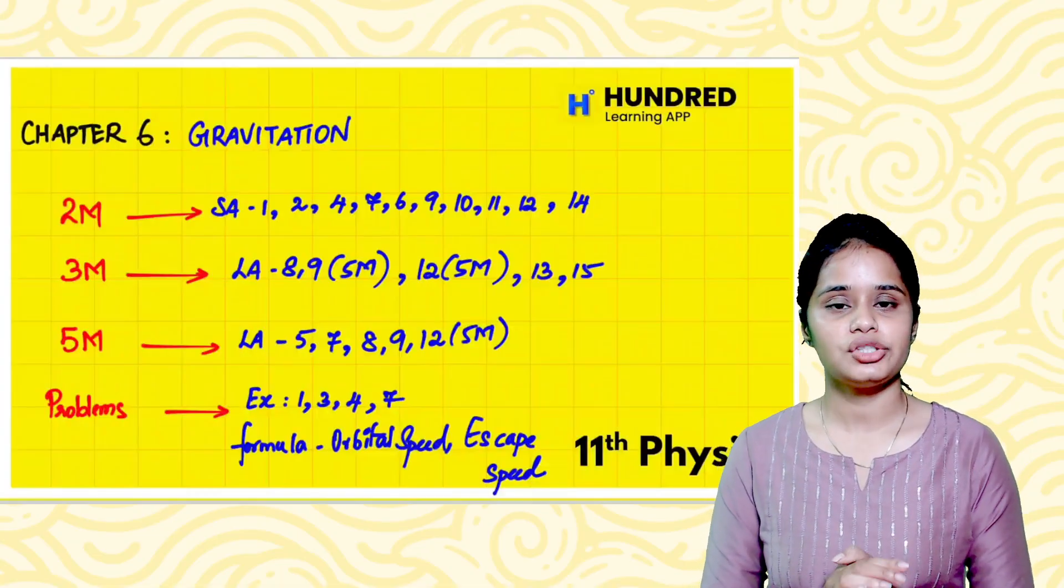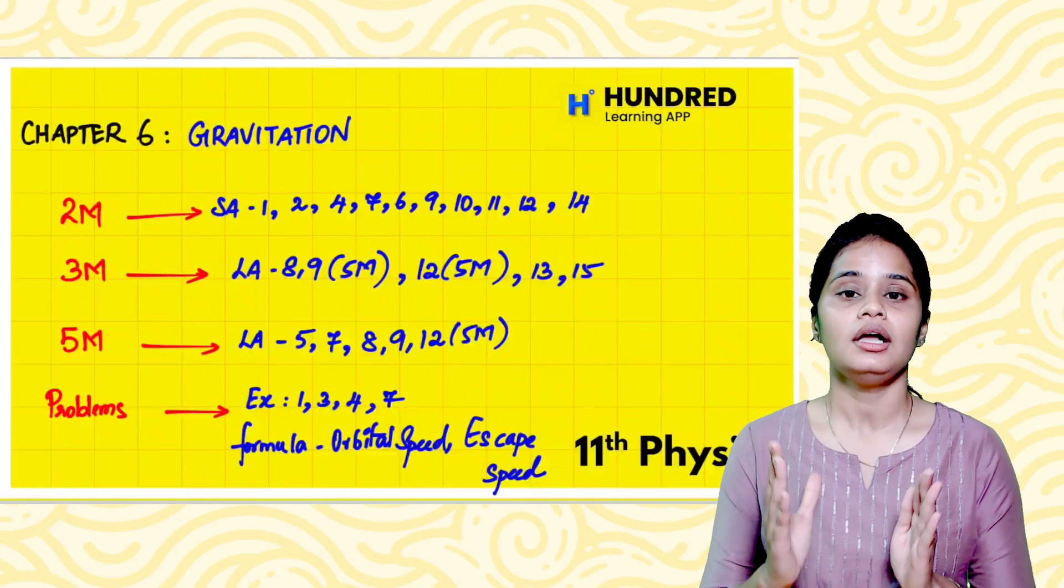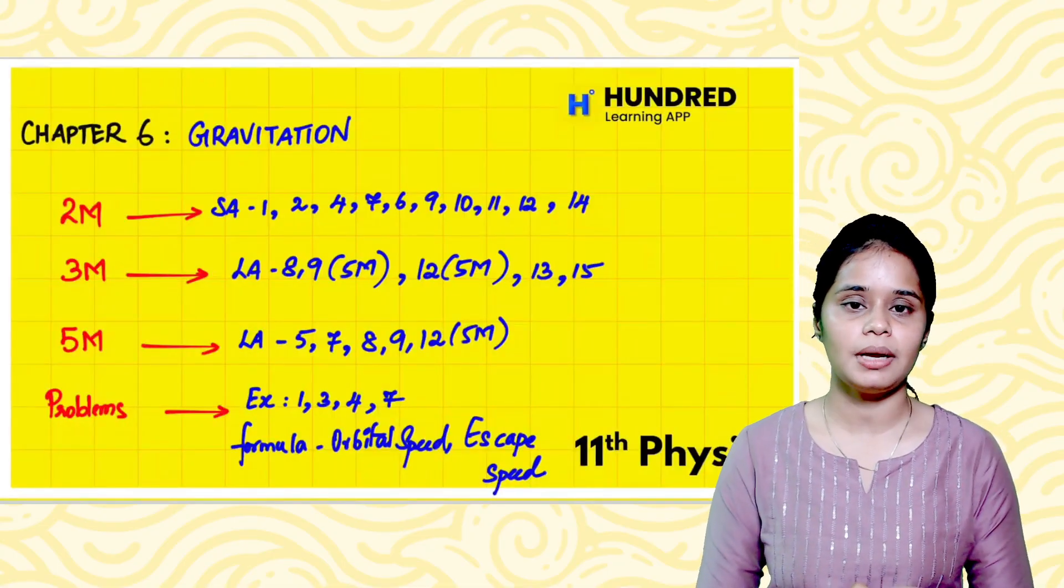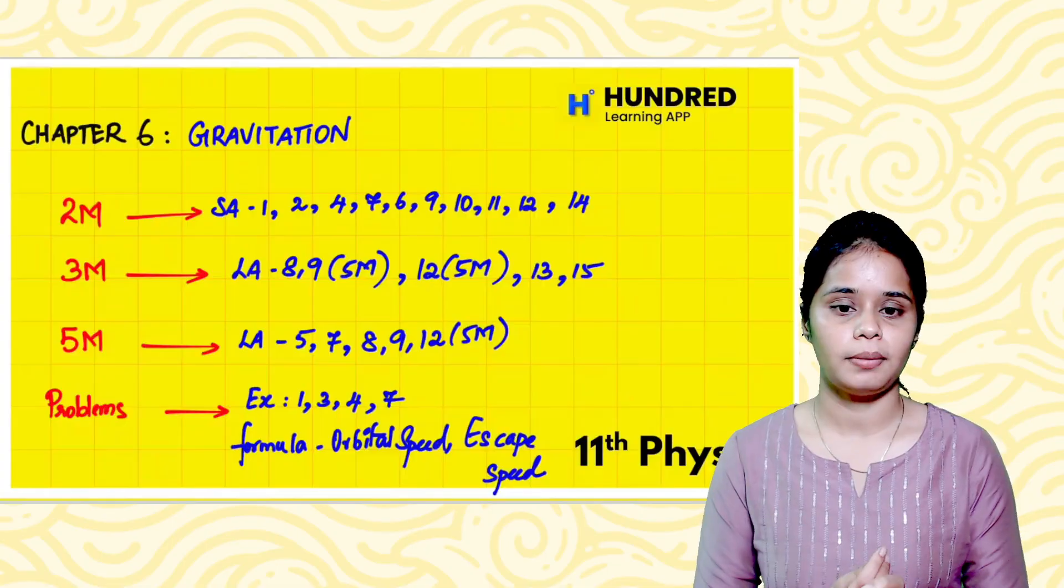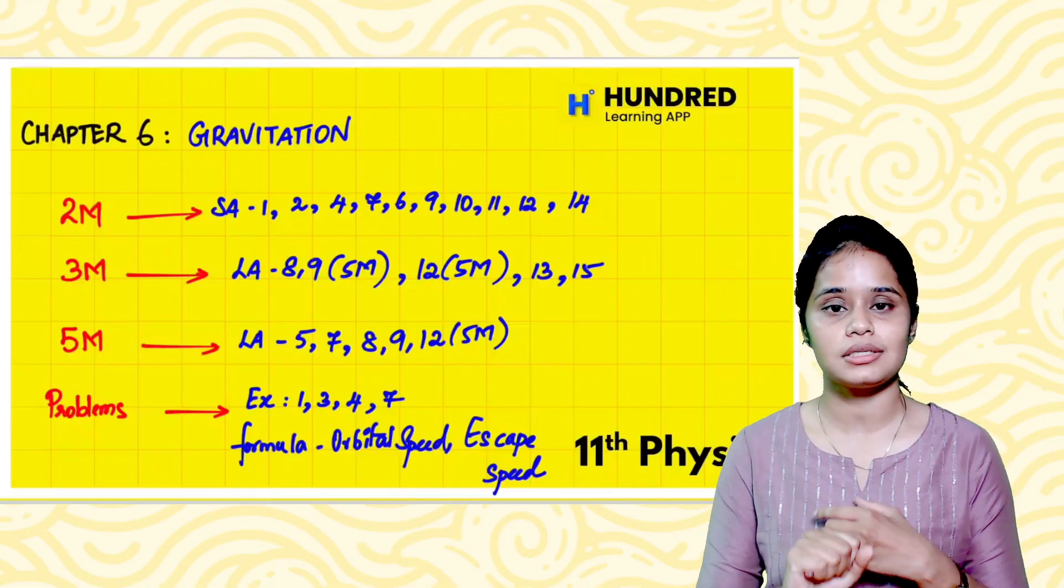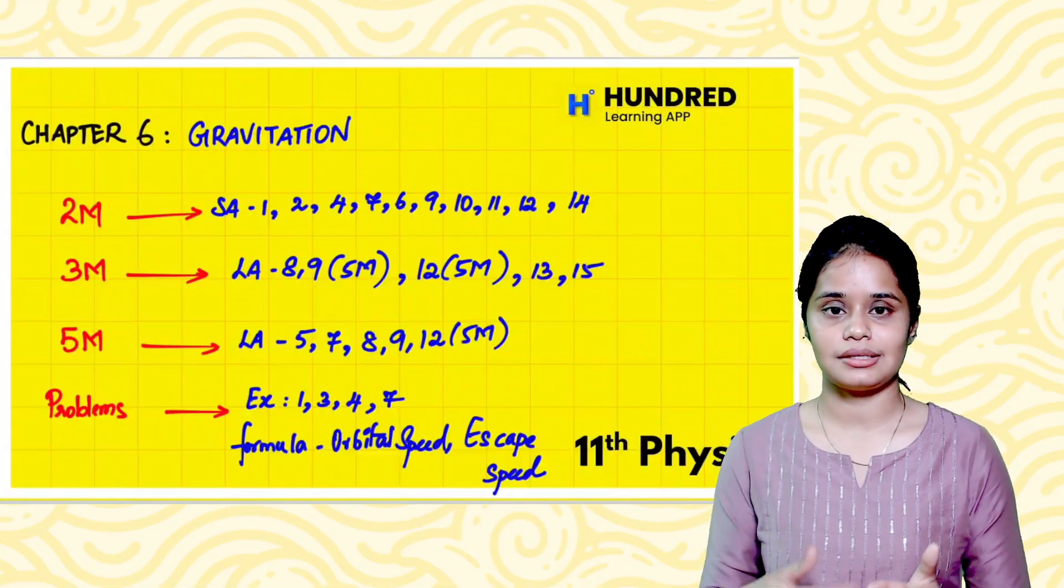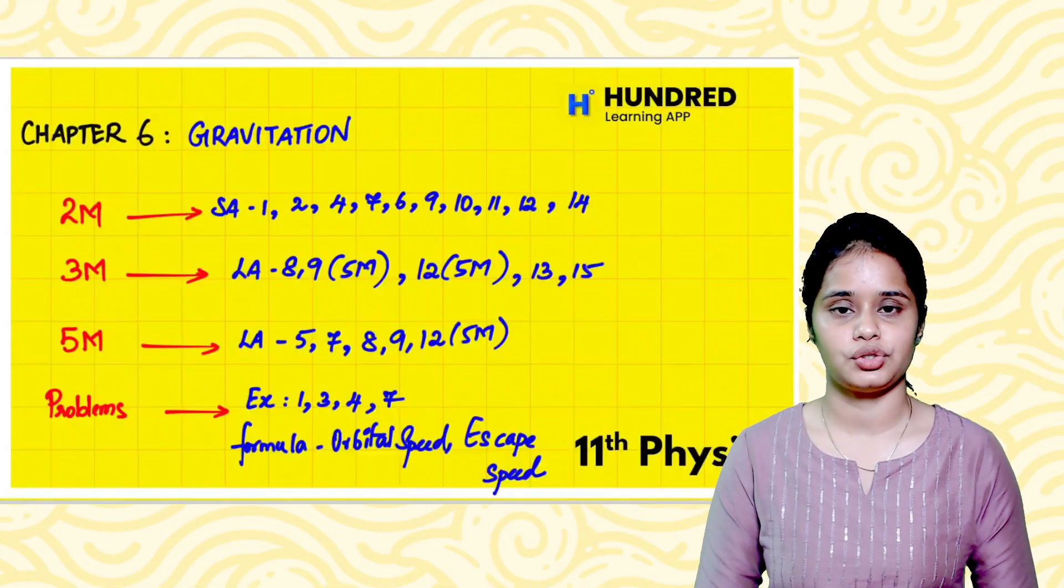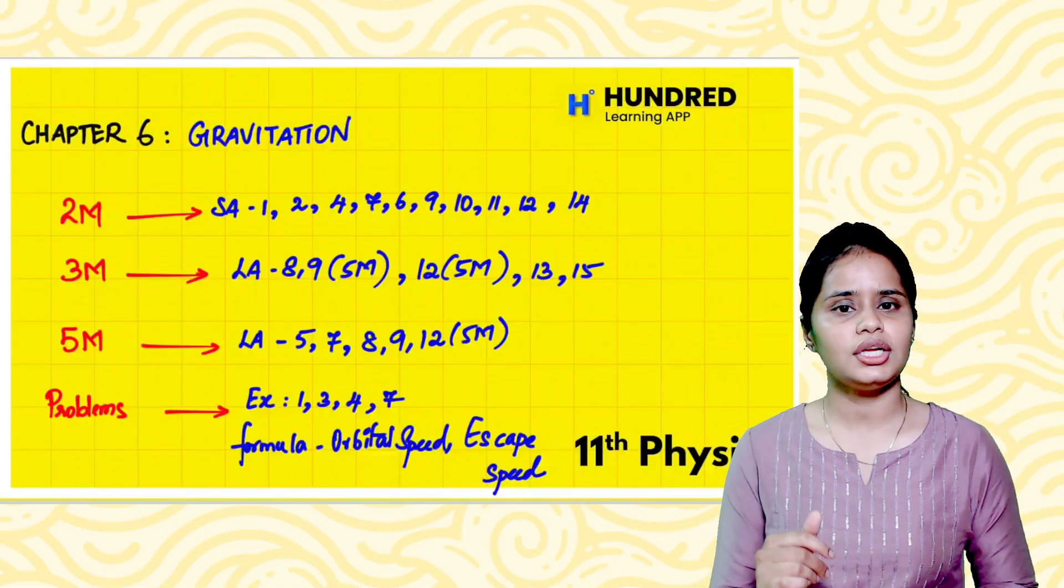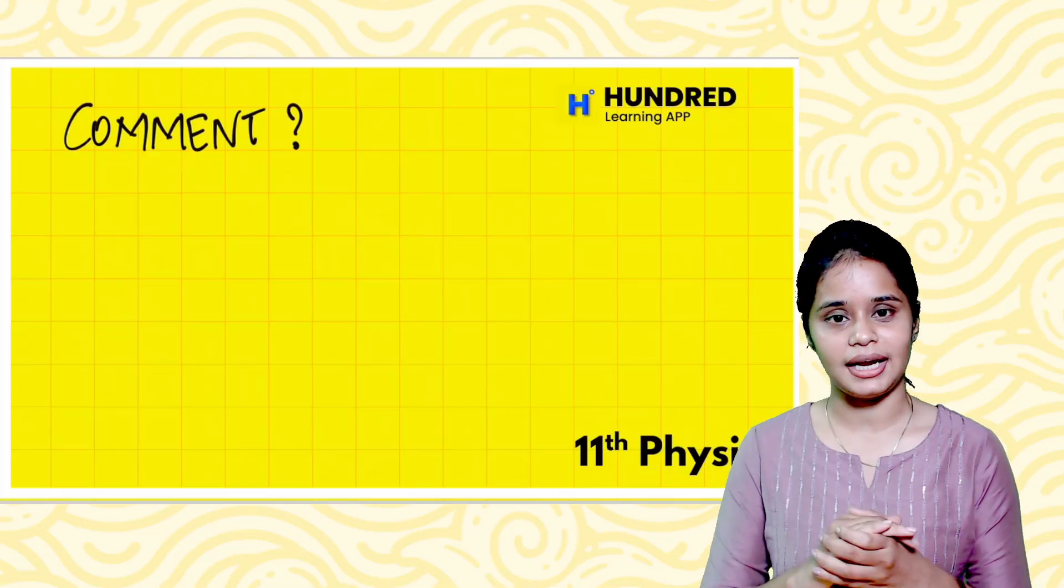Problems in the chapter - in the exercise 1, 3, 4, 7. These problems came last year. We need to apply orbital speed and escape speed formulas. These two formulas we are going to apply.